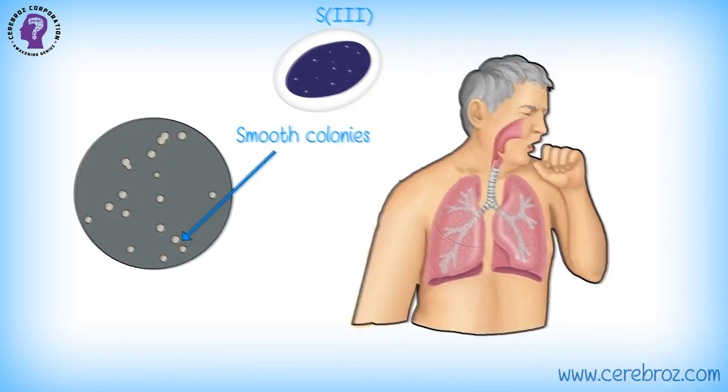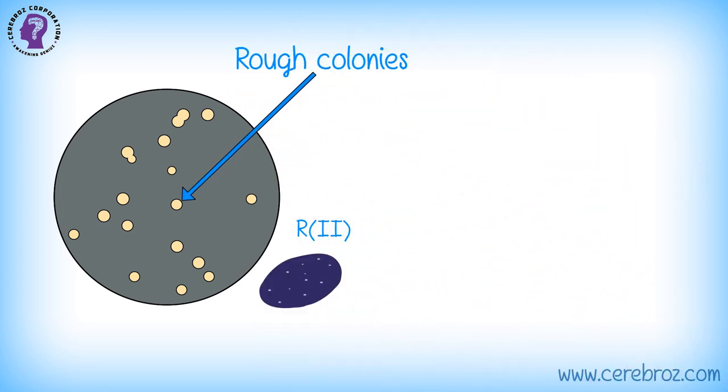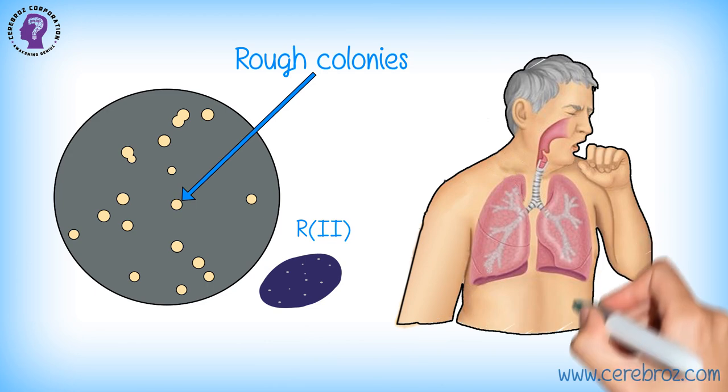And R2, which have no capsule, giving rough colonies R and is avirulent, unable to cause pneumonia.